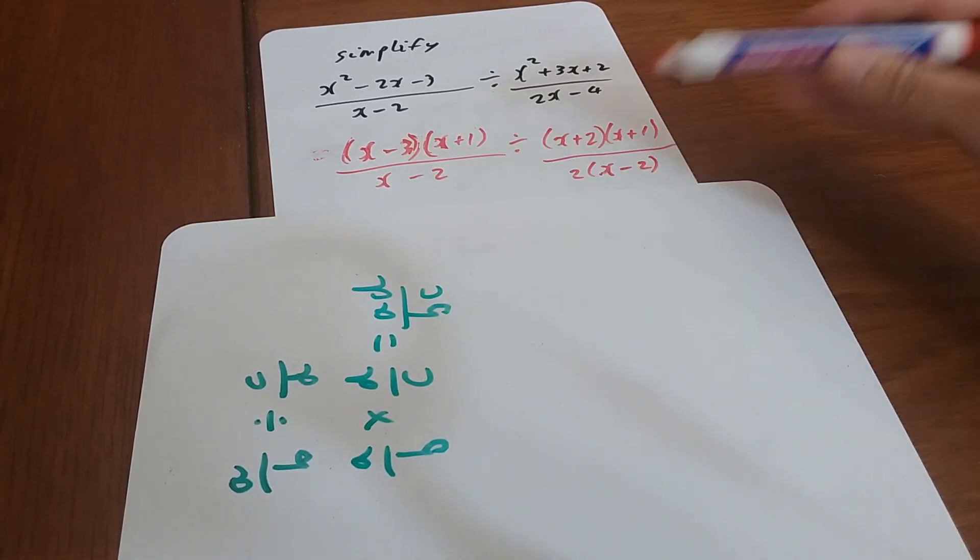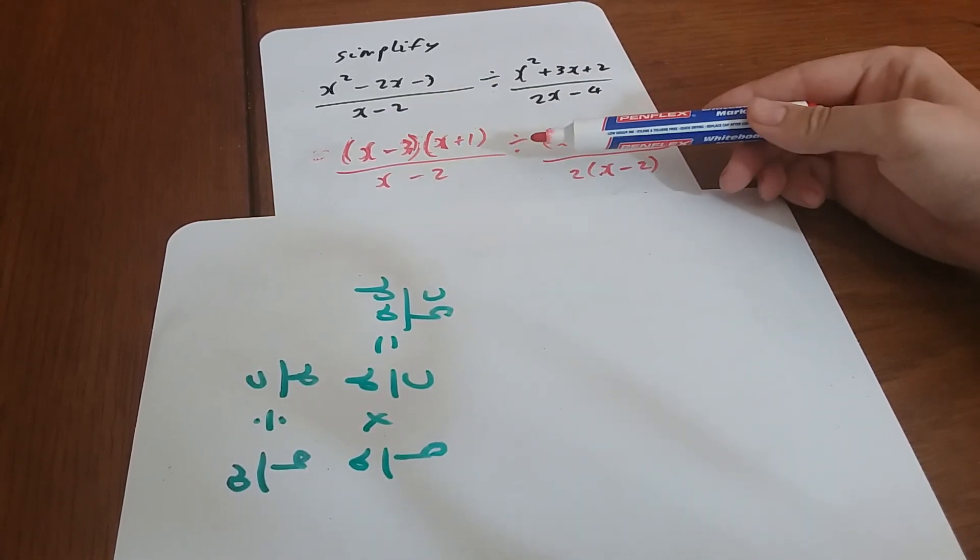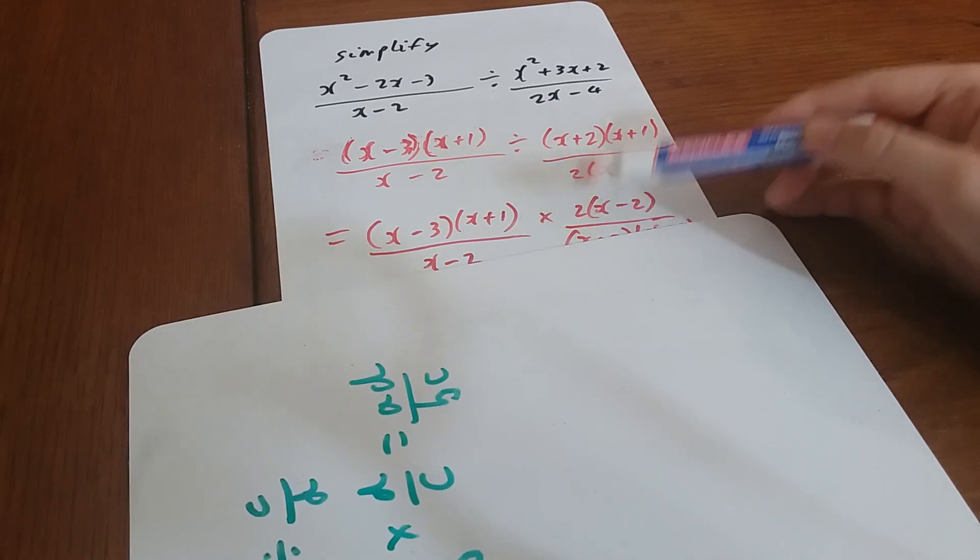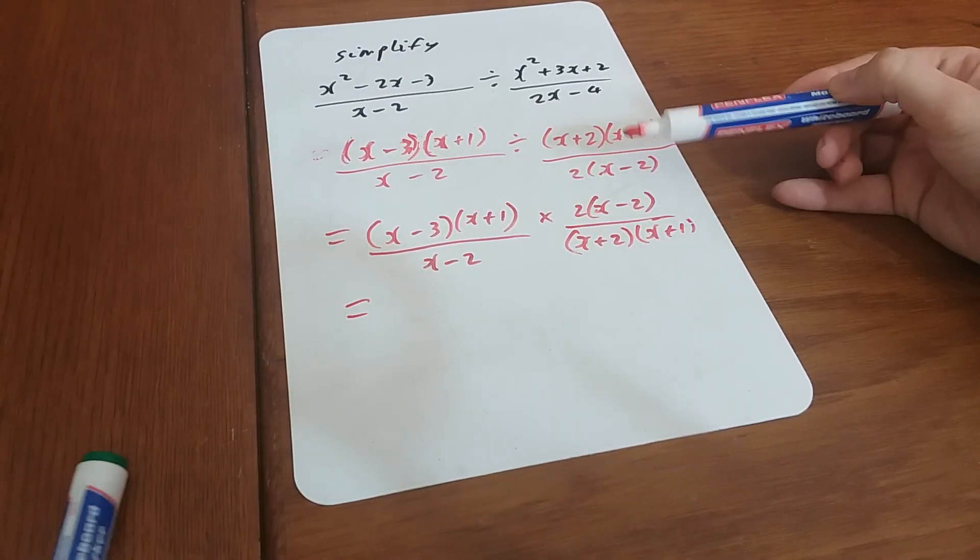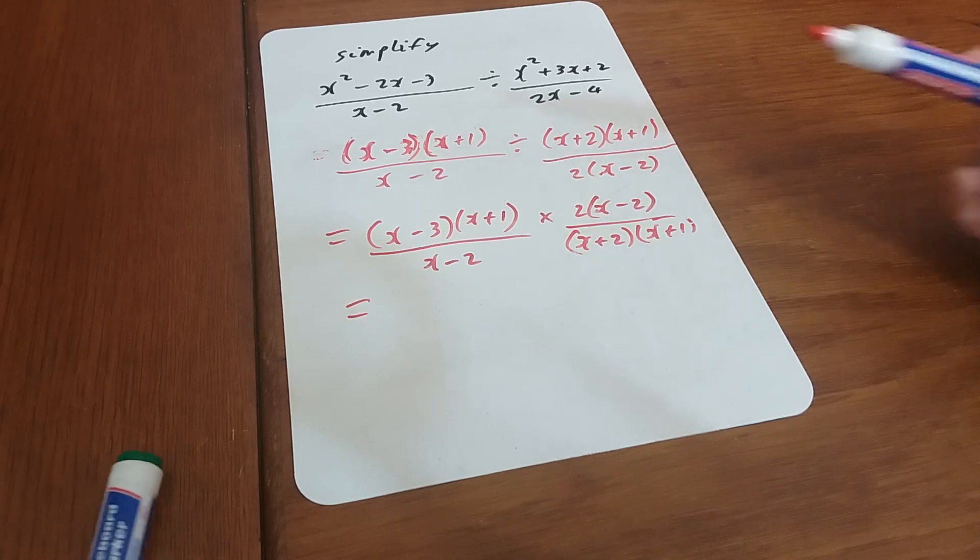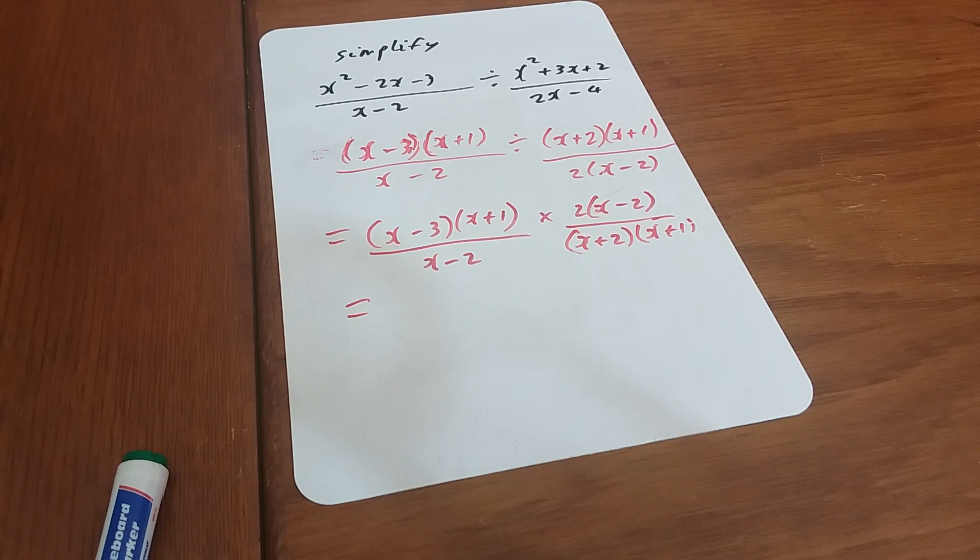Right, keep, change, flip. I'm going to keep the first thing the same. I'm going to change the dividing to a times, and I'm going to flip this over, so now it's the bottom divided by the top.